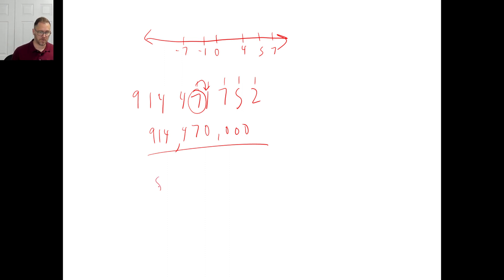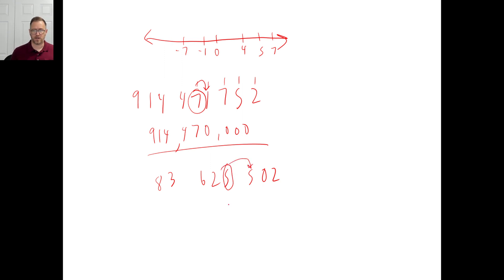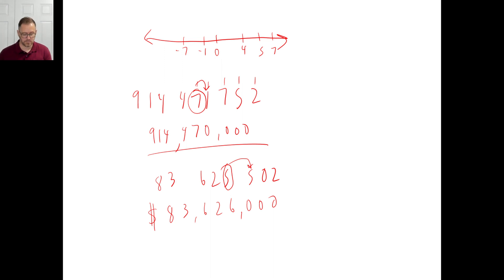Problem D: round 83,625,502 to the nearest thousand. Which digit is the thousands? Look right — is it five or greater? Yes, so the five rounds up to a six, everything to the right becomes zeros, and everything to the left stays exactly the same. That's your answer — which is also approximately my annual salary, most of which my wife spends on essential oils. Have a great day — see you next time!